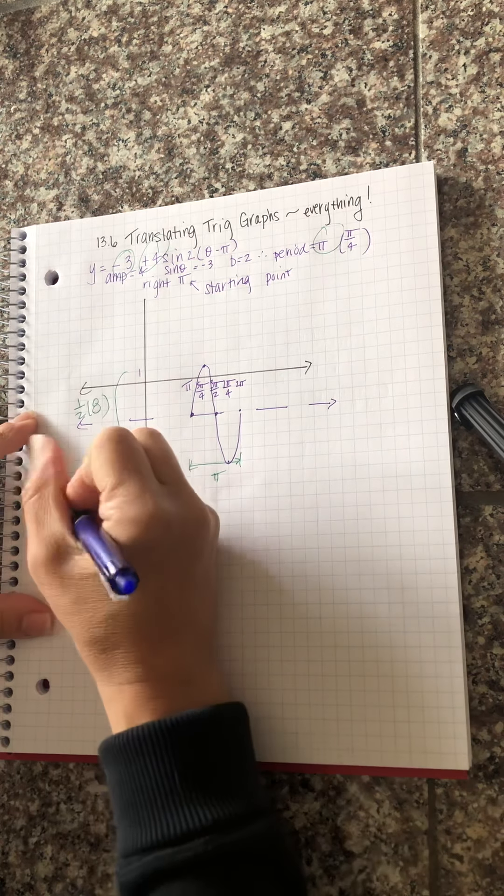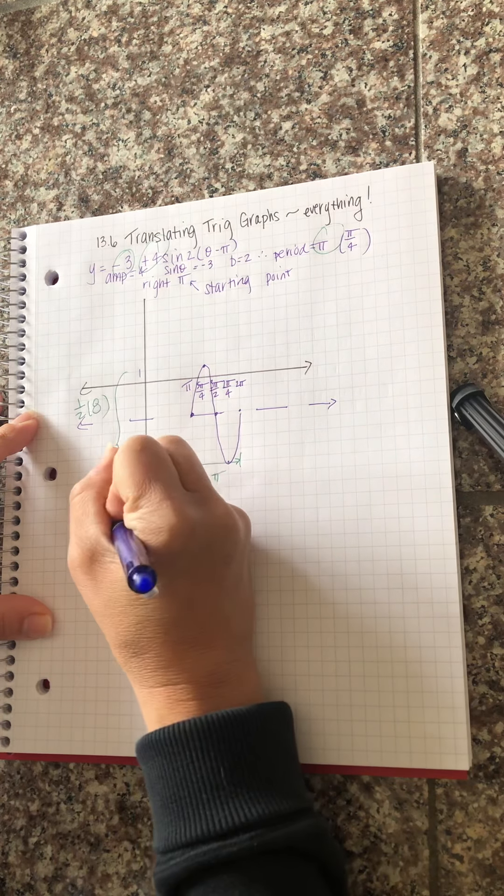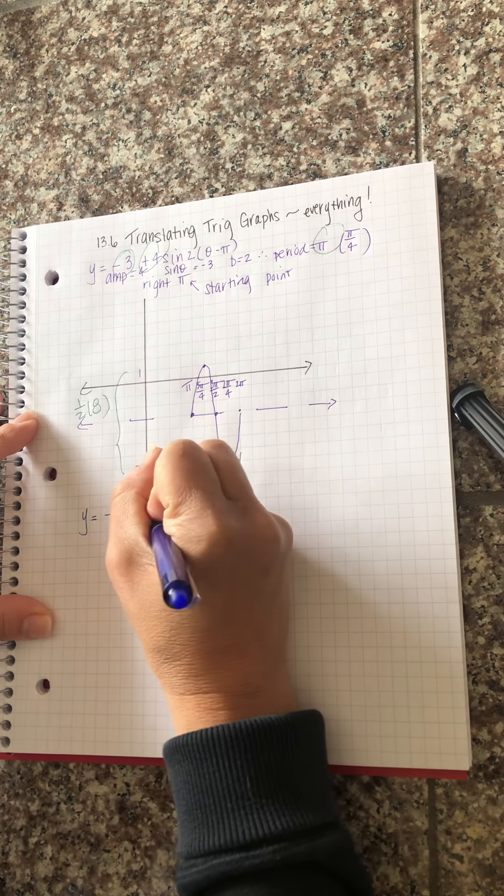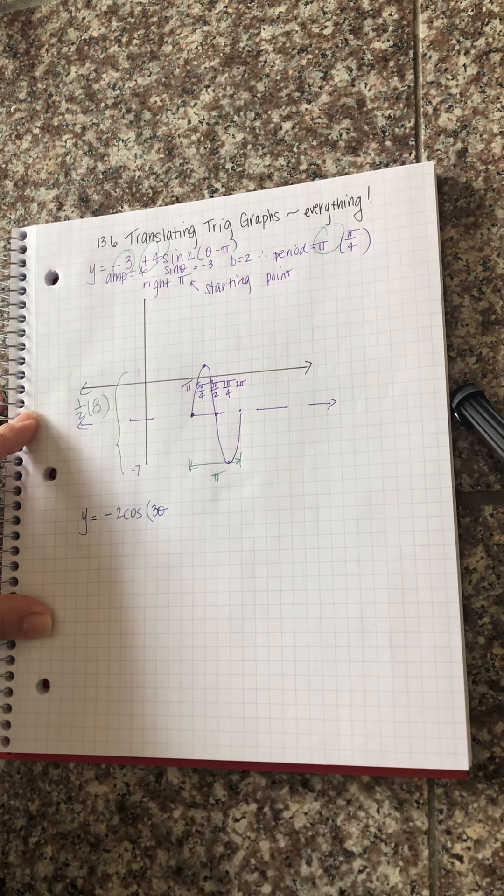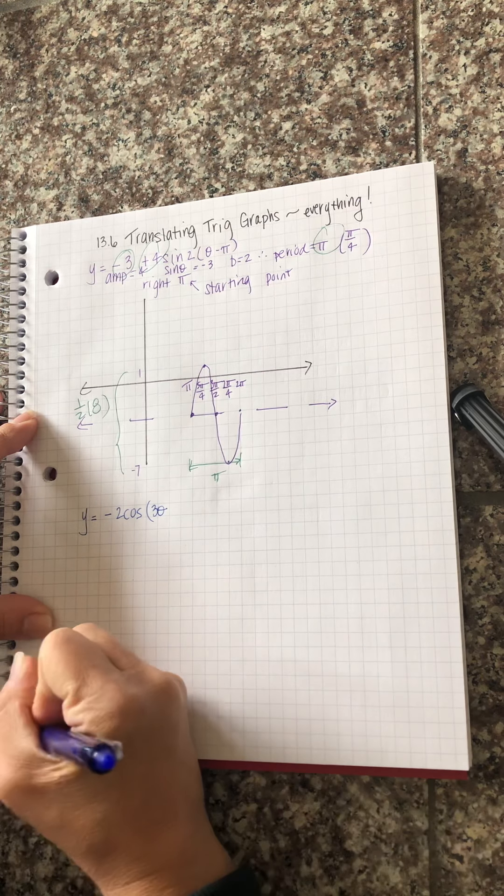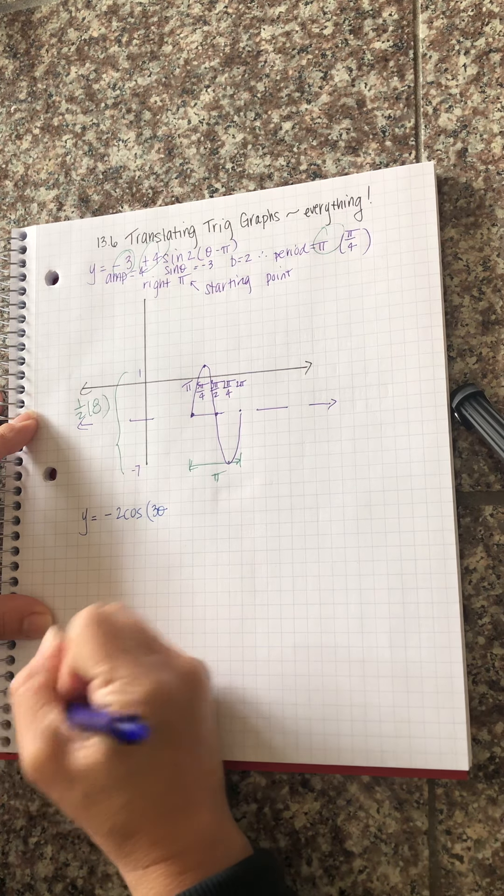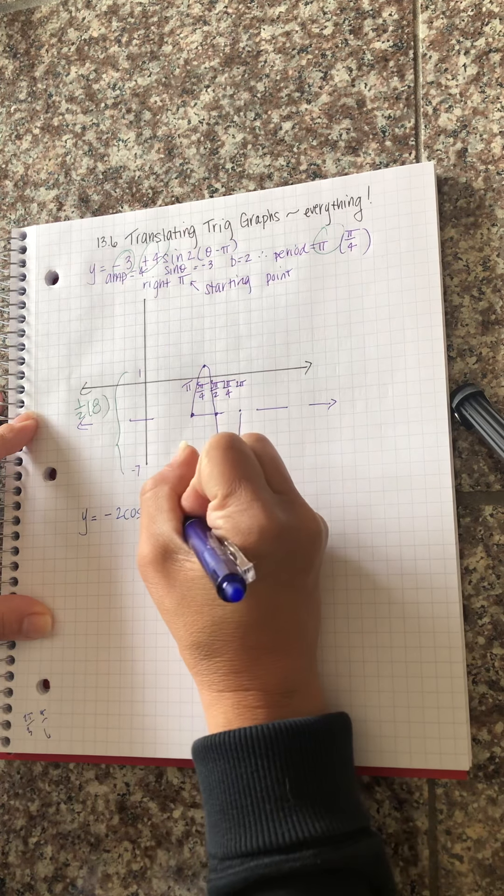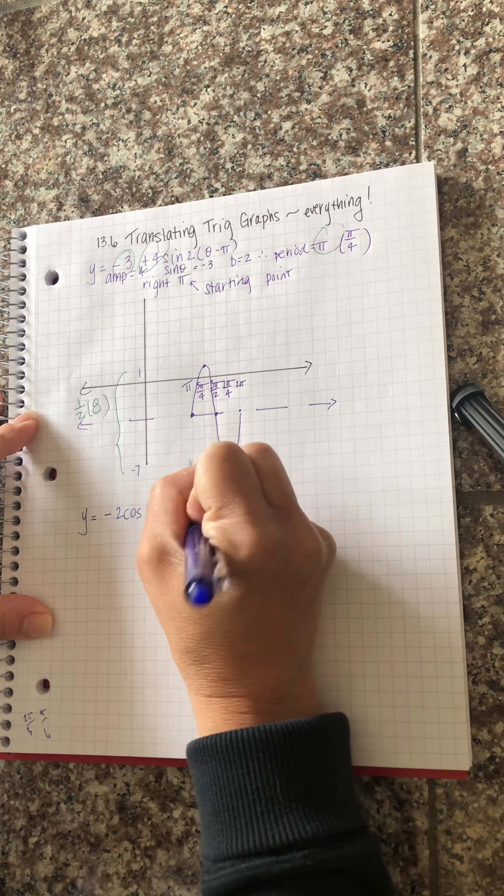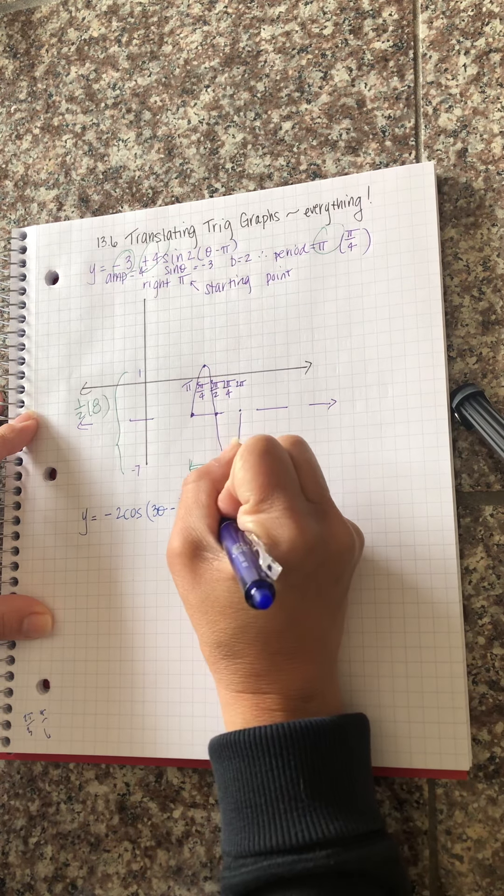So let's see something like y equals negative two times the cosine of three theta minus pi over six plus one. Okay, purposely put the plus one on the end. Doesn't matter where it is.